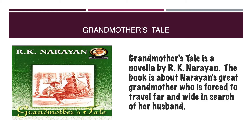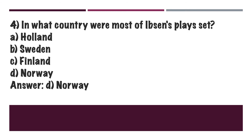Fourth question: In what country were most of Ibsen's plays set? A. Holland, B. Sweden, C. Finland, D. Norway. The right answer is Norway.